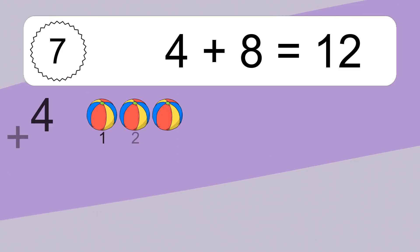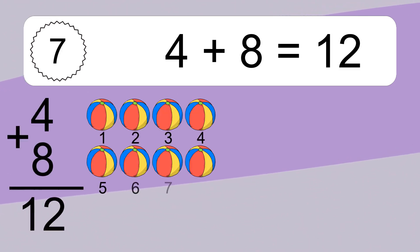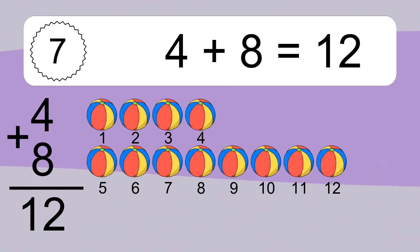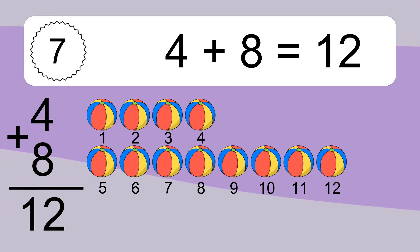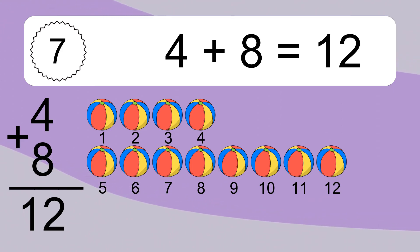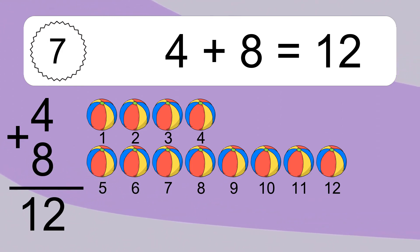Four plus eight equals what? Four plus eight equals twelve. Let's count it: one, two, three, four, five, six, seven, eight, nine, ten, eleven, twelve.